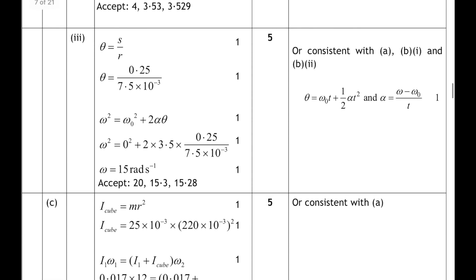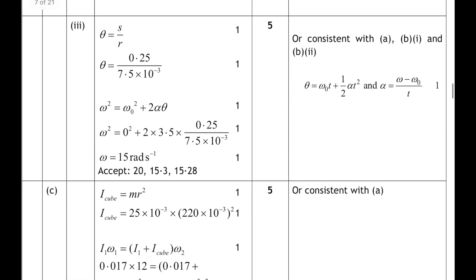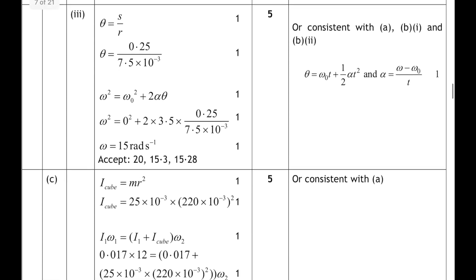Looking at the SQA marking instructions: the first two marks are for realising you have to convert 0.25m into the angular displacement, though there's no separate mark for working it out — you must substitute your working into the equation of motion used to find angular velocity. Five-mark questions are always pretty tricky; it's not a straightforward calculation, which is why the question says 'determine' rather than 'calculate'. Watch out for that.